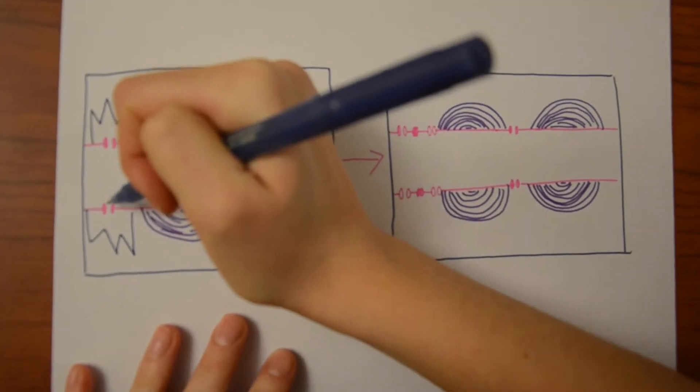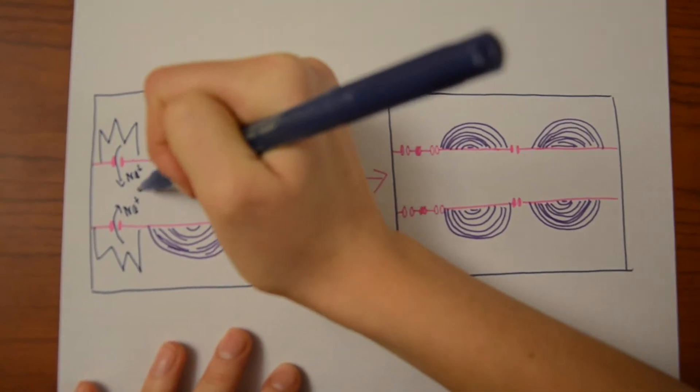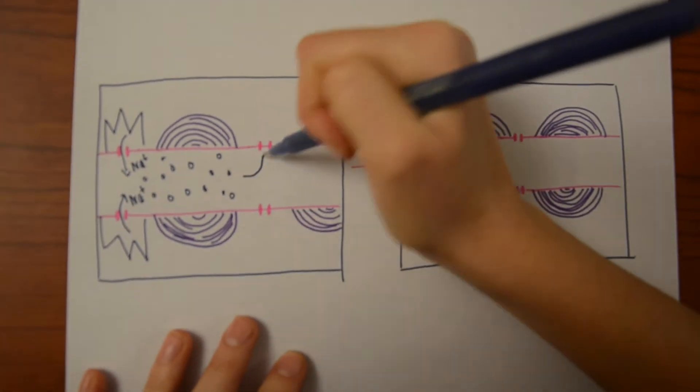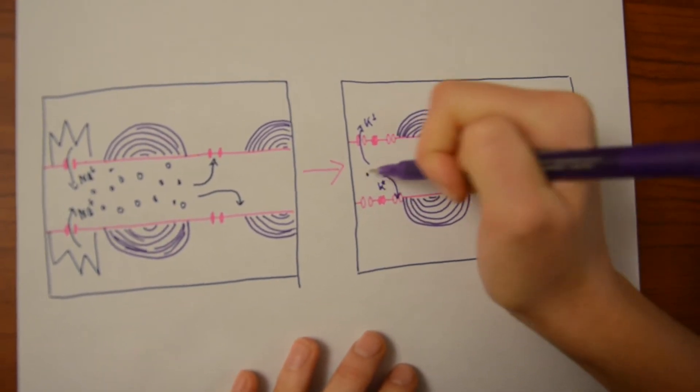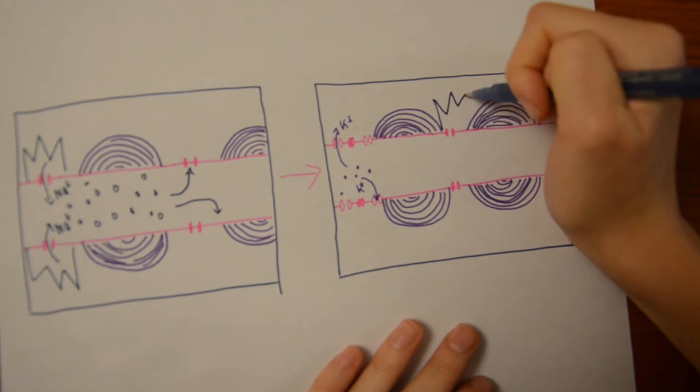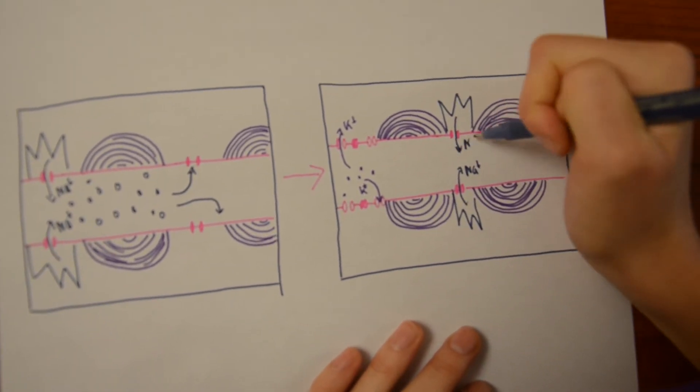On the other hand, this process occurs much faster in myelinated axons since the myelin sheath prevents ions from continuously moving through channels, therefore only allowing for movement between nodes of ranvier. This continues until it elicits a response at the terminal buttons.